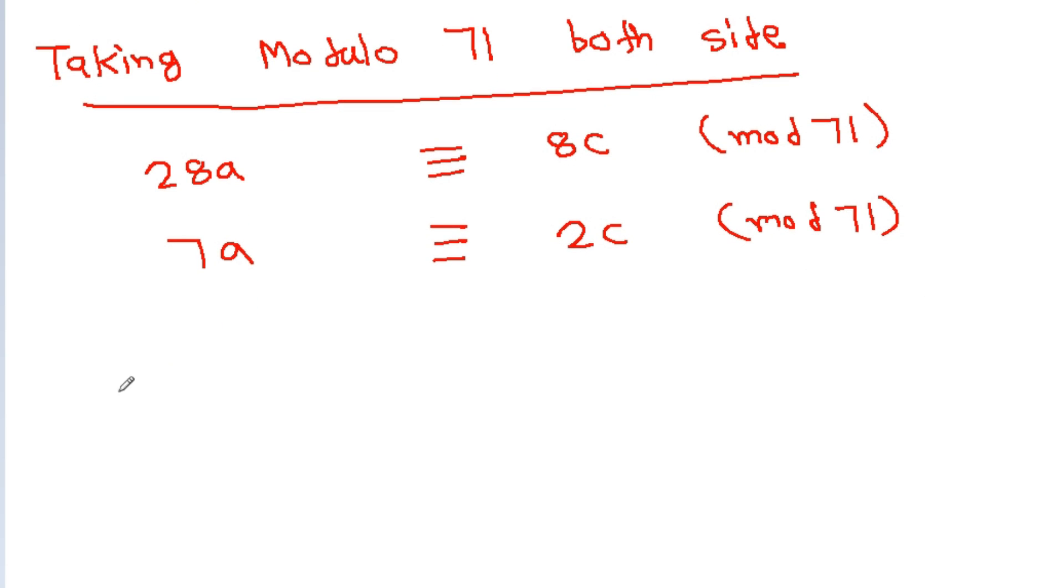Note that a, b, and c are single digit integers. So there is only one possible value for a and c: a equals 2 and c equals 7.